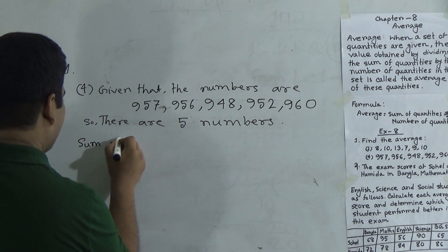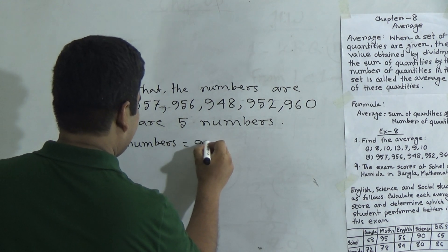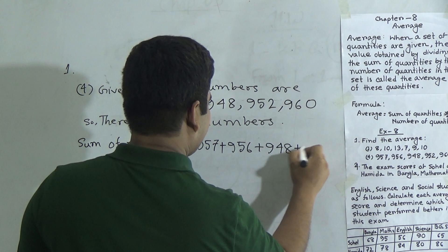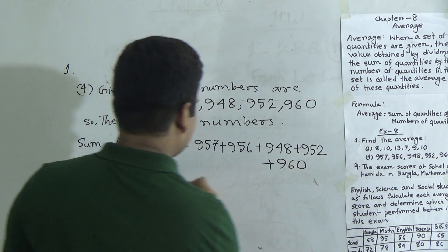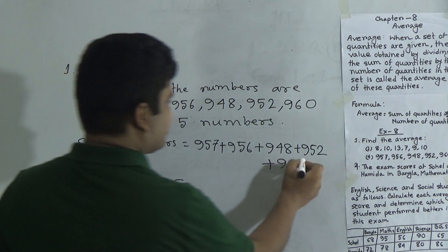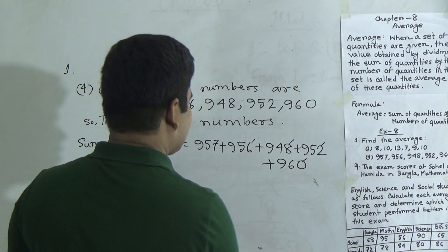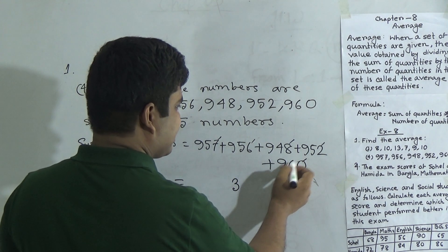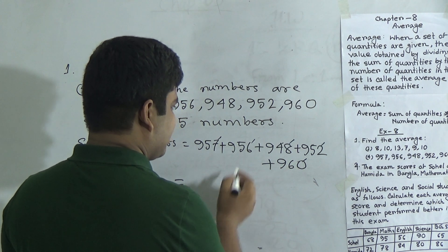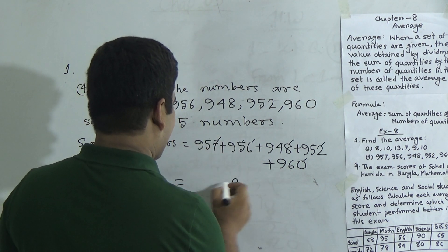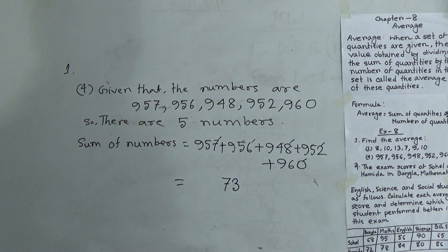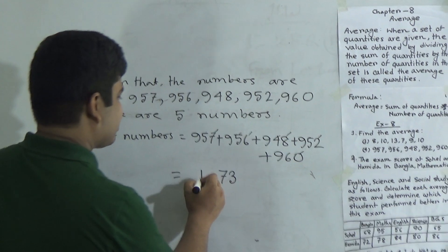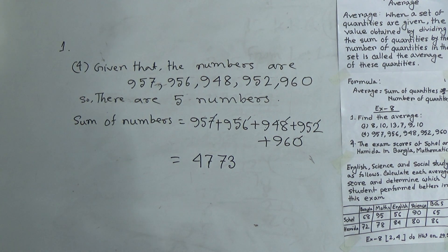Now we find out the sum of numbers: 957 plus 956 plus 948 plus 952 plus 960. Adding the ones digits: 0 plus 2 plus 8 plus 6 plus 7 equals 23. Write 3 carrying 2. Tens digits: 6, 5, 4, 5, 5 — summing to 27 plus carry gives us a result. The sum of all these numbers is 4773.